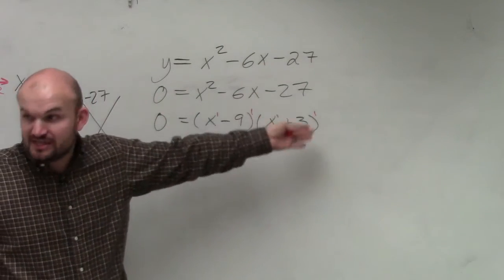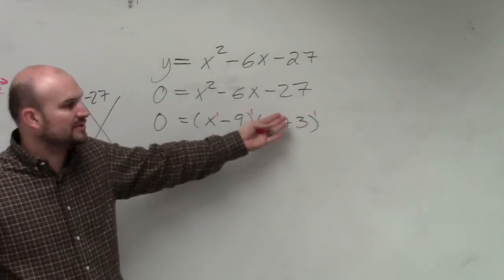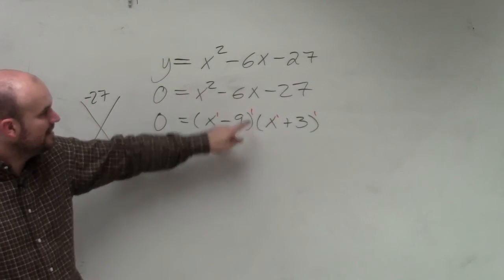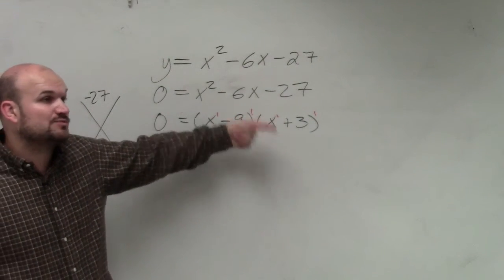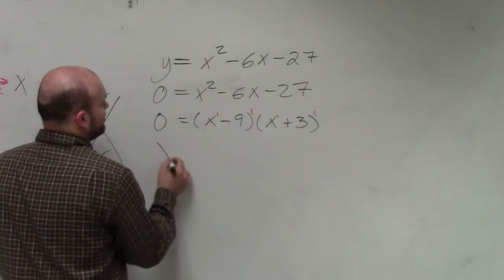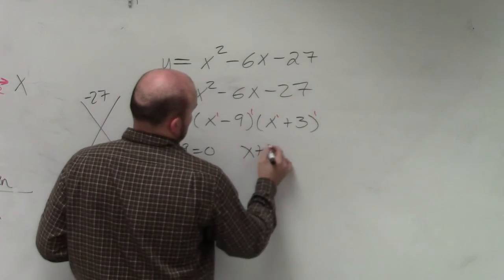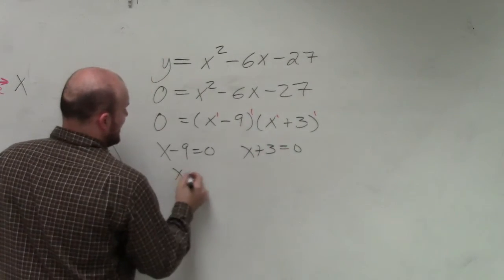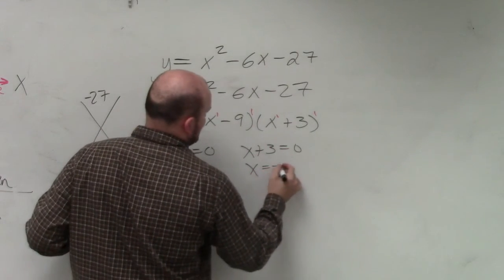Well, since the multiplicity is 1, you could think linear, but I don't want to confuse the vocabulary. But yeah, since the multiplicity is 1, we know the graph crosses at these two zeros. So we apply the zero product property, and we get x equals 9 and x equals negative 3.